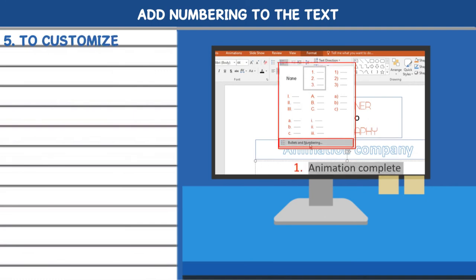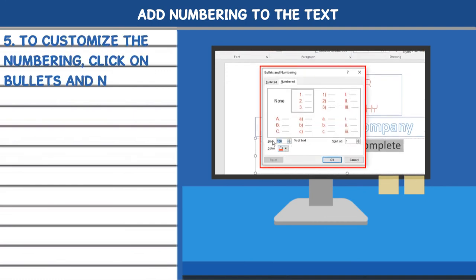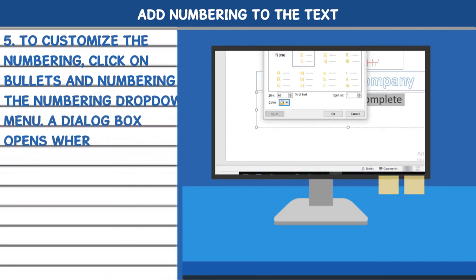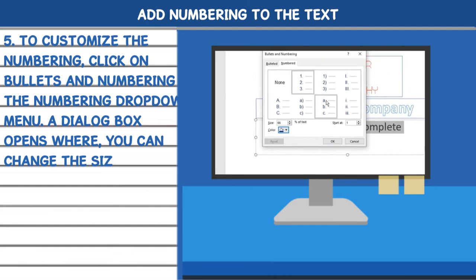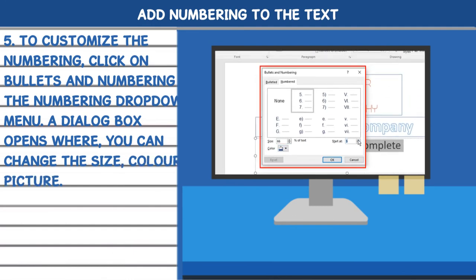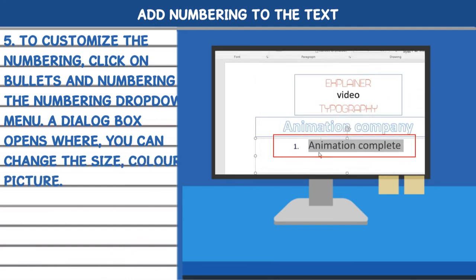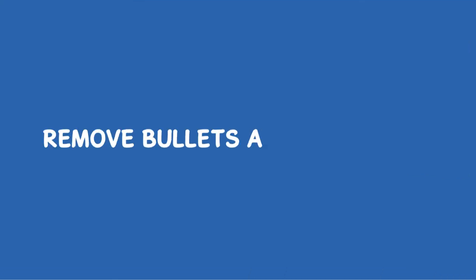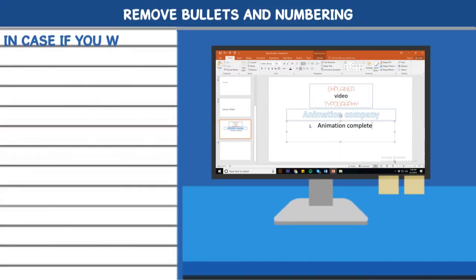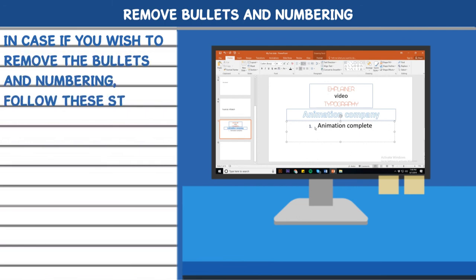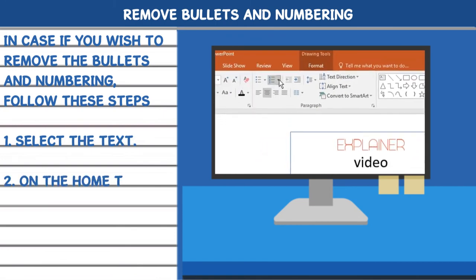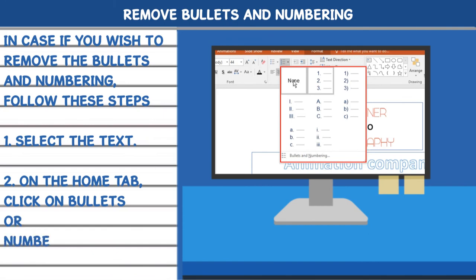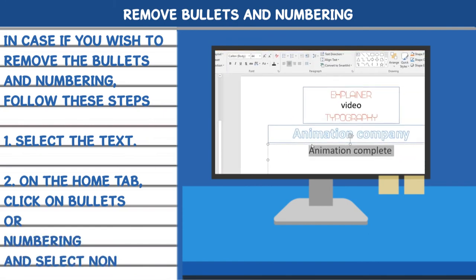5. To customize the numbering, click on Bullets and Numbering in the numbering drop-down menu. A dialog box opens where you can change the size, color, and picture. Remove bullets and numbering. In case you wish to remove the bullets and numbering, follow these steps. 1. Select the text. 2. On the home tab, click on Bullets or Numbering and select None.